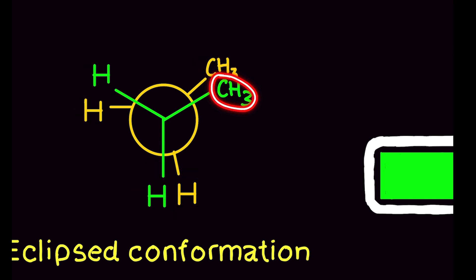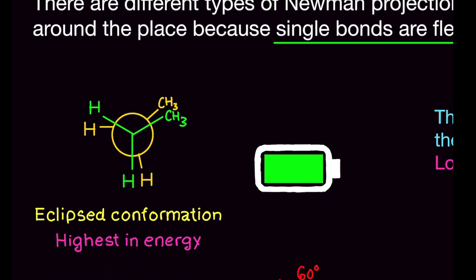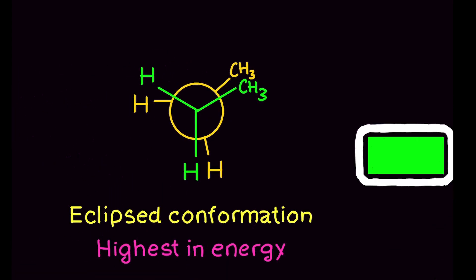The methyl group attached to the front carbon is eclipsing the back carbon completely. The hydrogen from the front carbon is completely eclipsing and blocking the hydrogen from the back carbon. When I draw this, I draw them side by side because there's no good way to draw them on top of each other — but in reality they are on top of each other. This is the eclipsed conformation.